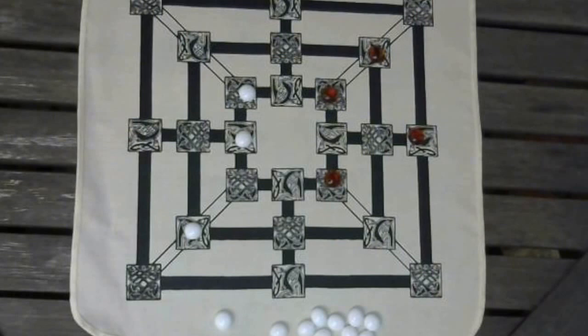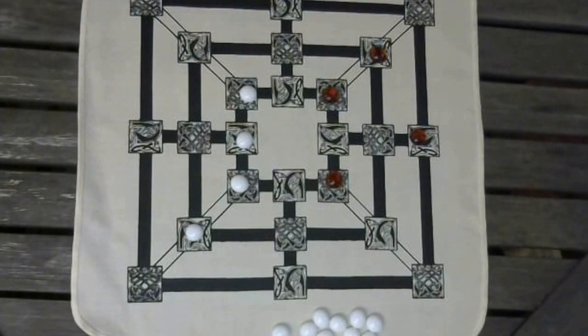Every time you make three in a row of your pieces, you can remove one of your opponent's pieces from the board and that piece is dead for the rest of the game.